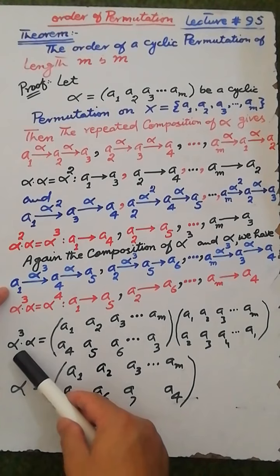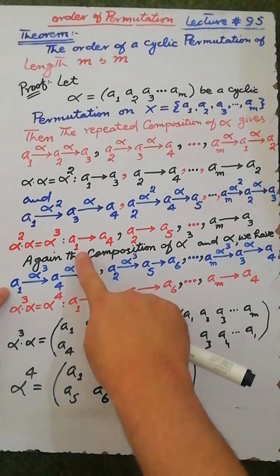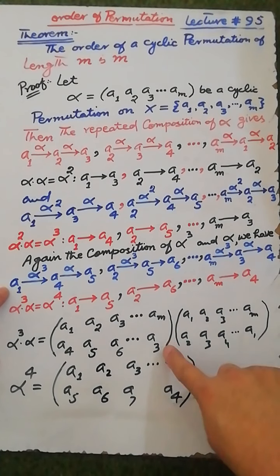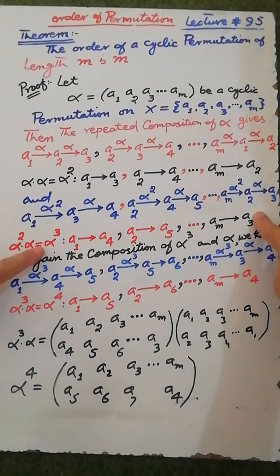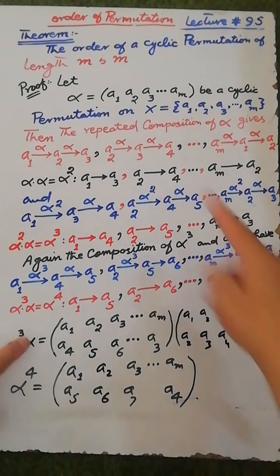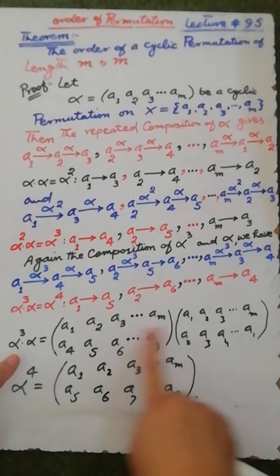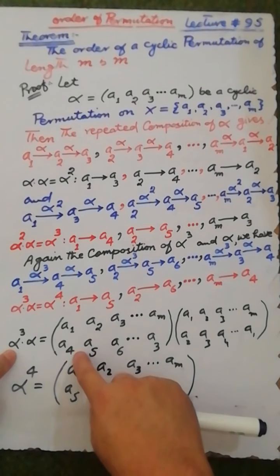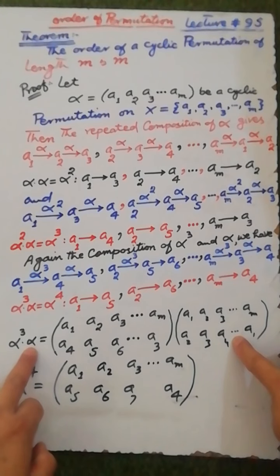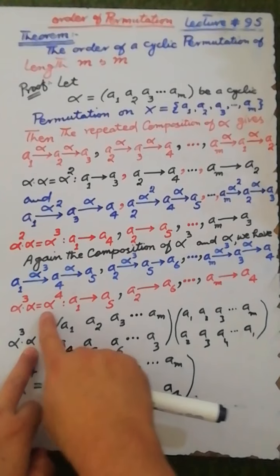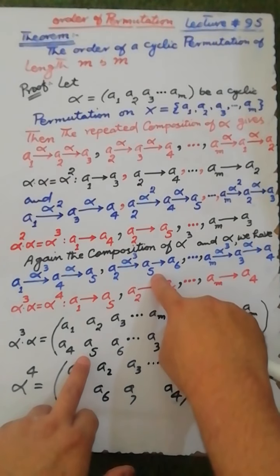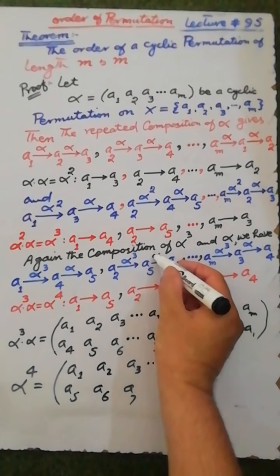Now computing the composition of alpha cubed with alpha, which is alpha to the fourth power. The elements of alpha cubed are: a1 maps to a4, a2 maps to a5, a3 maps to a6, and am maps to a3. Under alpha, a1 maps to a2, a2 maps to a3, a3 maps to a4, and am maps to a1. Under alpha cubed, a1 maps to a4, and under alpha, a4 maps to a5, therefore alpha to the fourth maps a1 to a5.